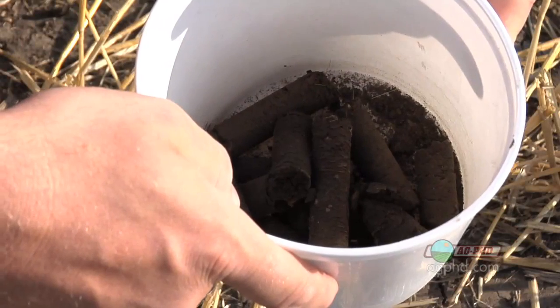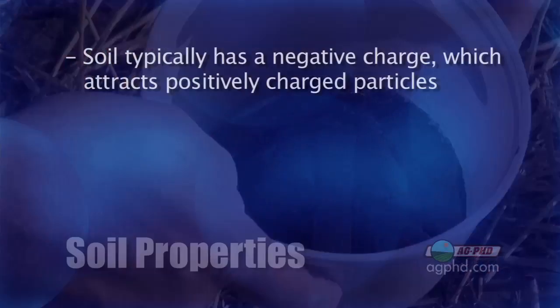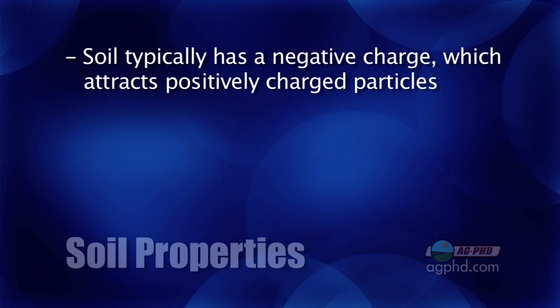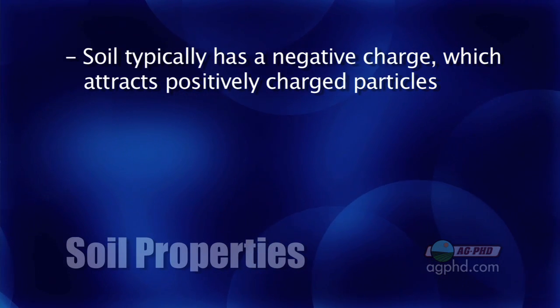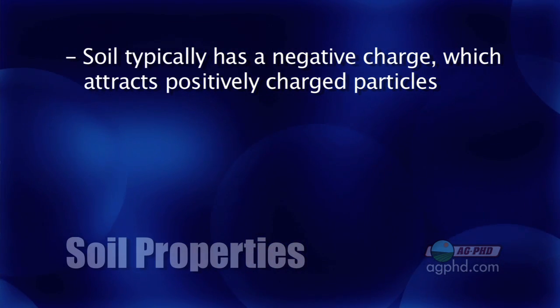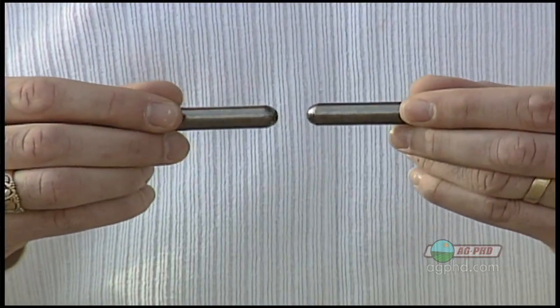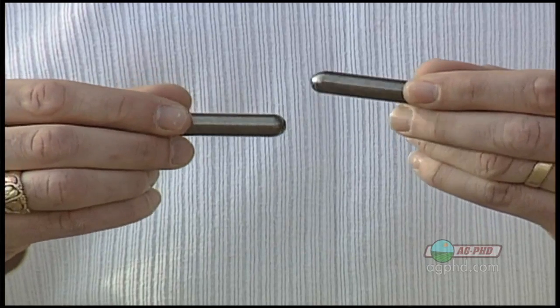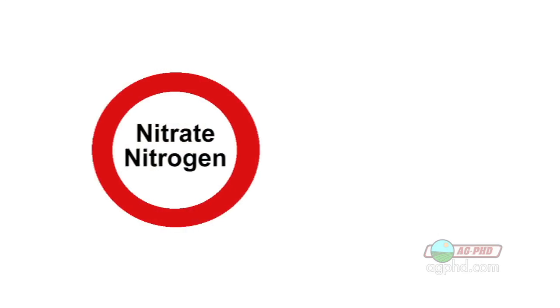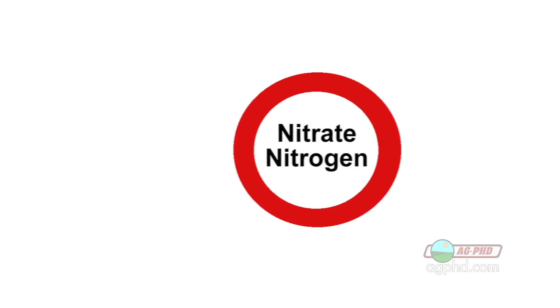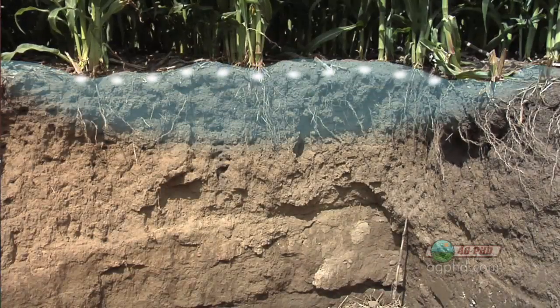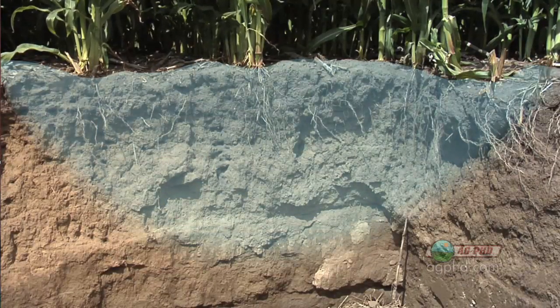Before we get into a big chemistry lesson here, let's look at soil to begin with. Soil typically has a negative charge, which means positively charged things will attract to it, just like a magnet — opposites attracting. So when things are in a negatively charged form, they repel from soil. Things like nitrate nitrogen, for example, are in a negative form, so they repel from soil. Nitrate doesn't bind. That means it moves around with soil water and can be lost if that water goes down or moves away.